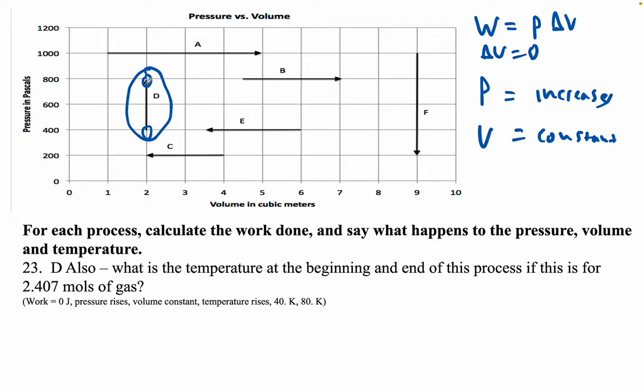What happens to the temperature? Well, the only way you can make the pressure rise and the volume stay constant is that you've got to increase the temperature. With an increase in temperature, the molecules are hitting the walls harder because they're going faster, and therefore it's exerting a bigger pressure.